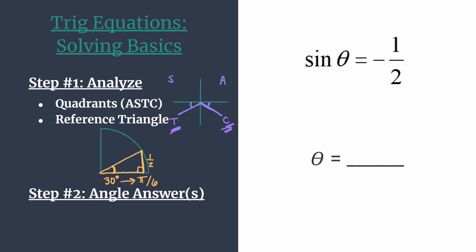Let's put everything together. Step two is to find our angle answers, and we know the reference angle for each must be pi over 6. For our angle in quadrant three, we're rotating all the way past pi — that's 6 pi over 6 — and then 1 pi over 6 past that. So one of our solutions, the one in quadrant three, must be 7 pi over 6.